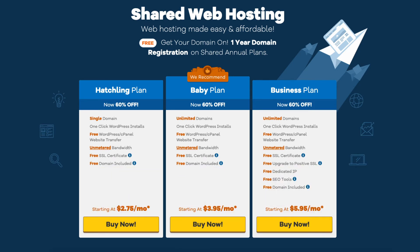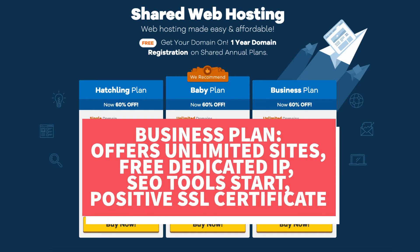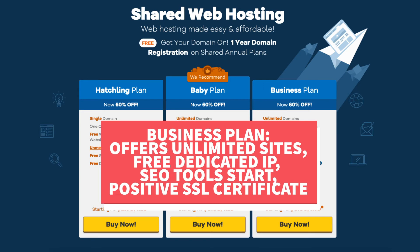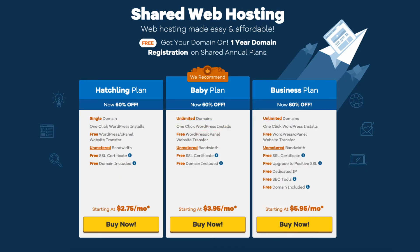The Business plan comes with unlimited sites and includes a free dedicated IP, Hostgator's SEO tool start add-on, and a free upgrade to a positive SSL certificate. I recommend going with the Hatchling or Baby plan when starting out, and then you can always upgrade to the Business plan as your site traffic and revenue grows. You can upgrade or downgrade to any of the plans at any time.